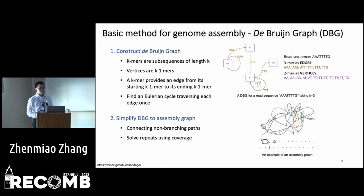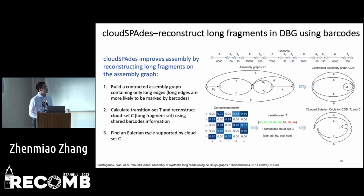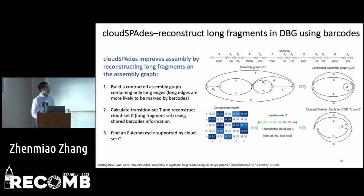After all the simplification steps, an edge in the assembly graph will be output as a unitig sequence. CloudSPAdes is a linked-read assembler based on the DBG. It reconstructs the non-fragments of the linked reads on the DBG and uses these non-fragments to guide path resolution.